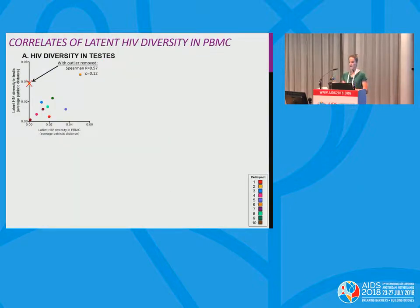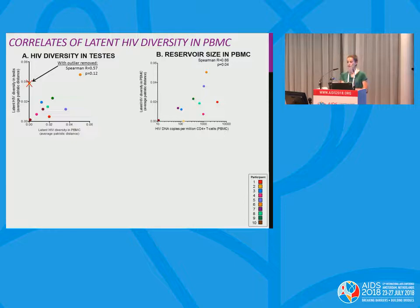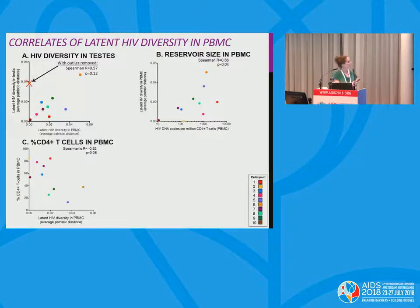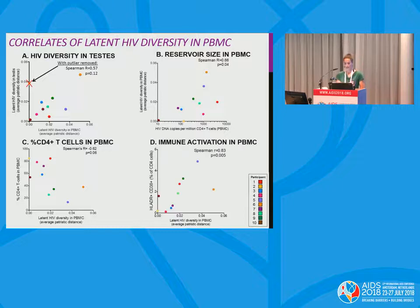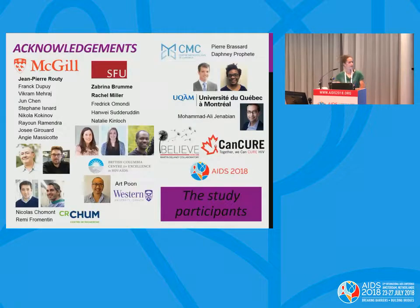We investigated correlates of latent HIV diversity in PBMCs and found that diversity in blood correlates with diversity in testis. Also, the larger the reservoir, the more diverse it tends to be. We found a negative correlation between HIV diversity in blood and CD4 T cell progression, and a strong positive correlation with immune activation as measured by co-expression of HLA-DR and CD38 on CD4 T cells.